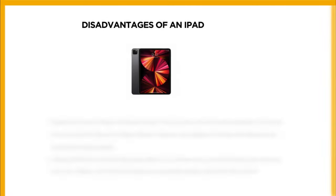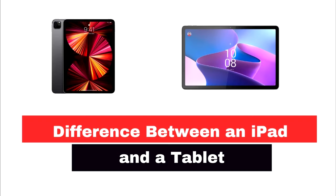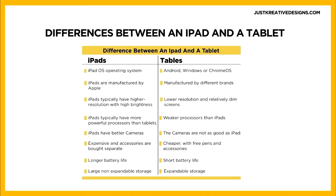Tablets vary when it comes to operating systems, with popular ones including Google's Android, Microsoft's Windows, and Apple's iOS. iPads are a line of tablets manufactured only by Apple Inc. Tablets, on the other hand, represent a variety of different brands manufacturing competing tablets — for example, Samsung, Windows, and Lenovo are some of the main players.